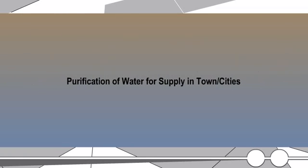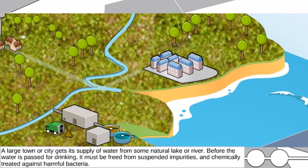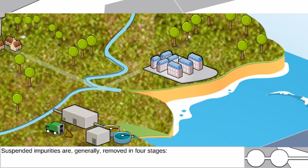Purification of water for supply in towns and cities. A large town or city gets its supply of water from some natural lake or river. Before the water is passed for drinking, it must be freed from suspended impurities and chemically treated against harmful bacteria.